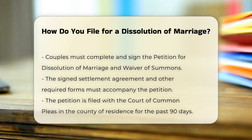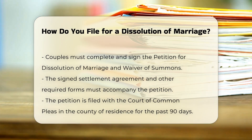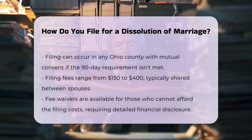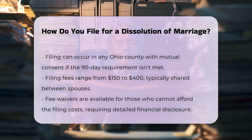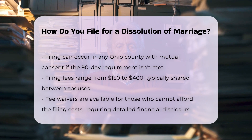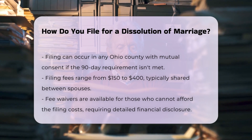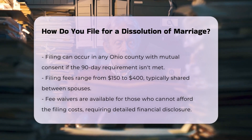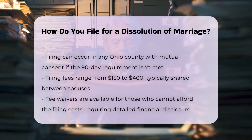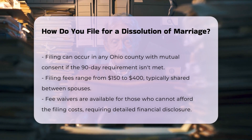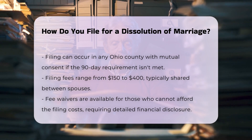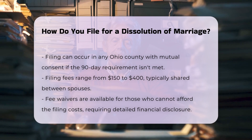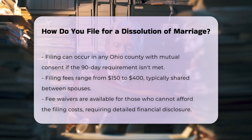If neither of you meets the 90-day requirement in any county, you might be able to file anywhere in Ohio with your spouse's consent. The filing fee for a dissolution varies from county to county, typically ranging between $150 and $400. You and your spouse will usually split the cost, but if you cannot afford it, you can request a fee waiver by providing detailed financial information.